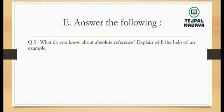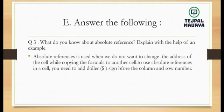Question 3: what do you know about absolute reference? Explain with an example. Absolute cell reference is used when we do not want to change the address of a cell while copying a formula to another cell. When you copy a formula, the cell addresses do not change automatically.